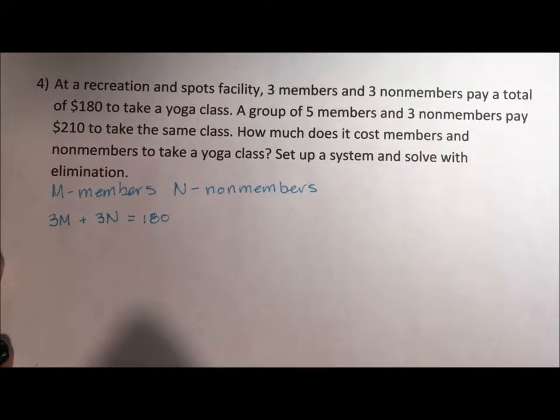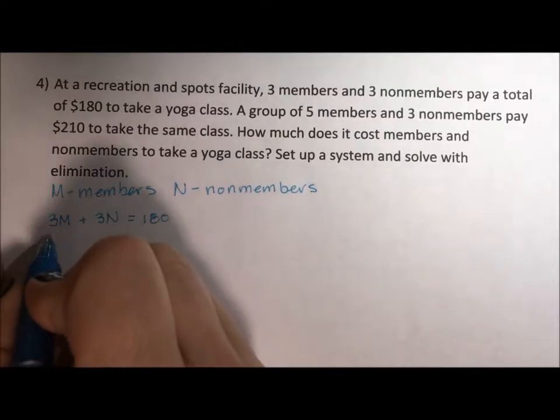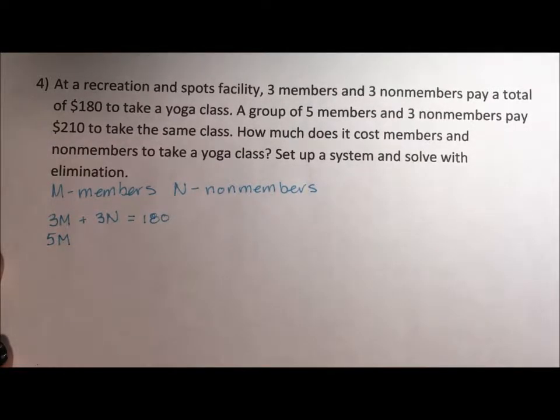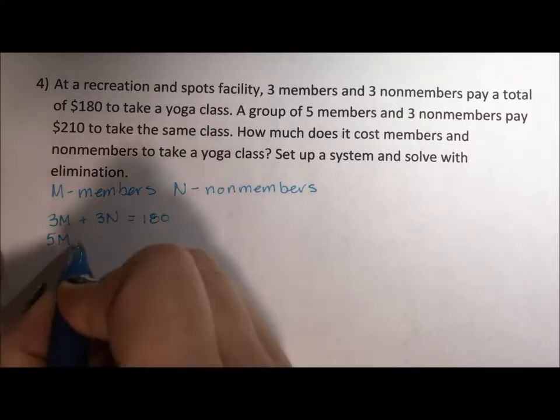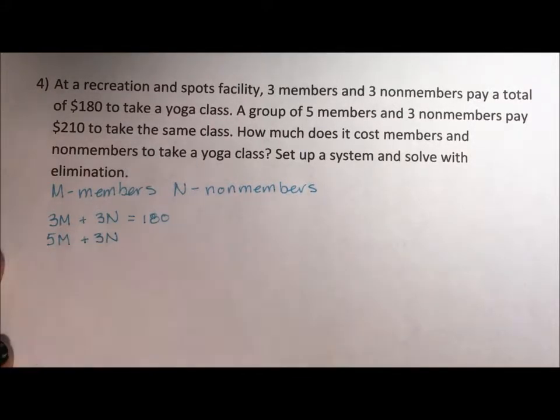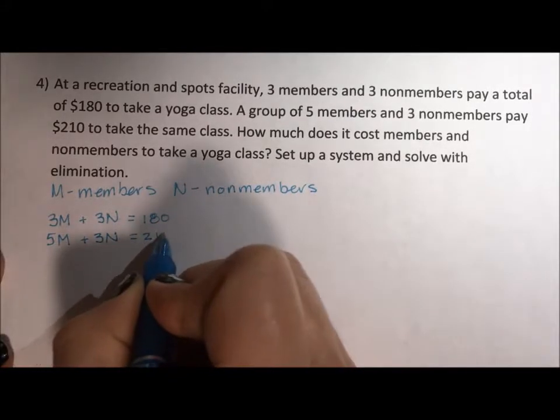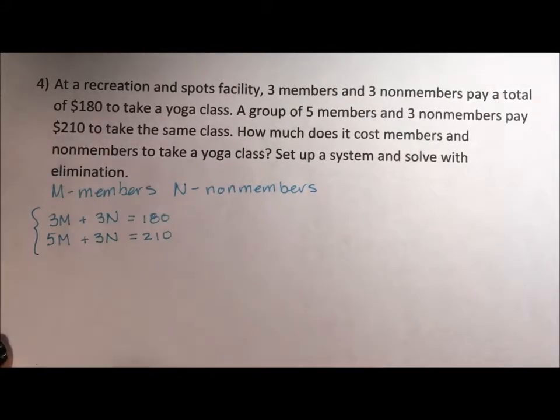And then the second group, we have five members, so five times whatever a member pays and three non-members, so plus three times whatever a non-member pays, comes to a total of $210. And here we have our nice system of equations.